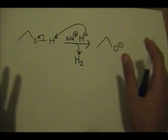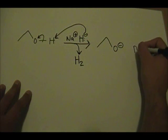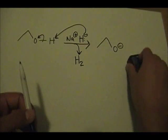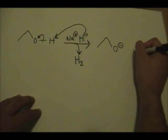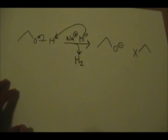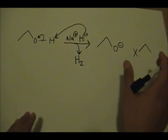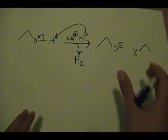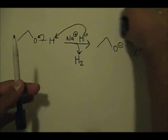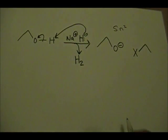Now this is where the alkyl halide comes into play. X could be any type of halogen. This aspect of the reaction mechanism follows an SN2 reaction mechanism.